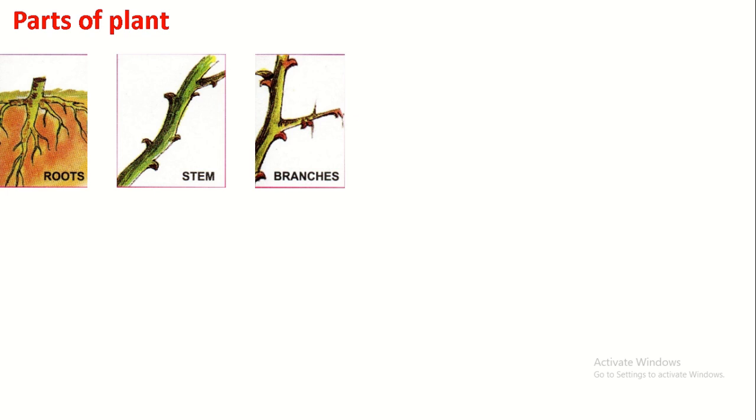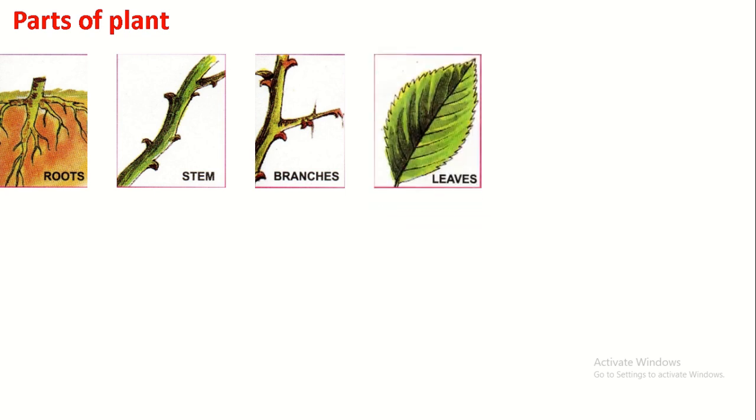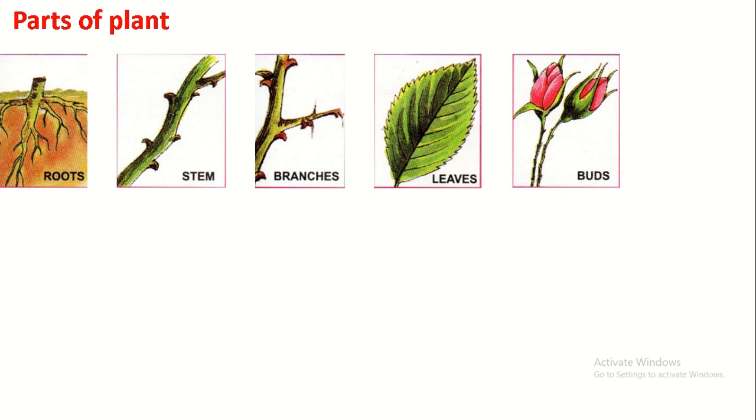Leaves are grown on the branches. Leaves prepare food and have stomata which allow water to percolate. Buds are the undeveloped flowers.